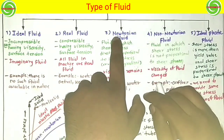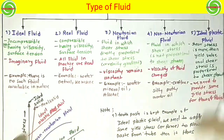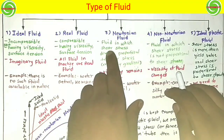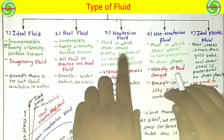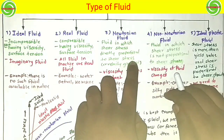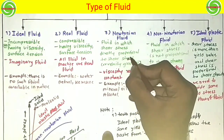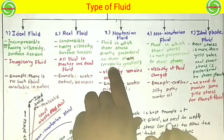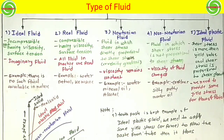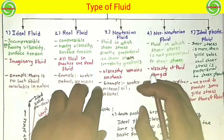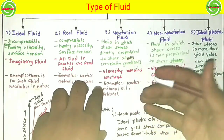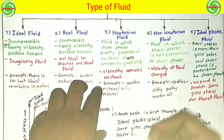Now we come to the third part, that is Newtonian fluid. What is Newtonian fluid? Newtonian fluid is one in which the shear stress is directly proportional to the rate of shear strain, or velocity gradient. The fluid in which shear stress is directly proportional to the rate of shear strain or velocity gradient is called Newtonian fluid.